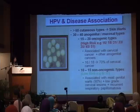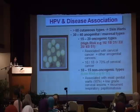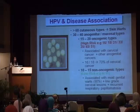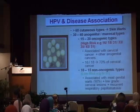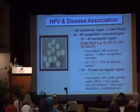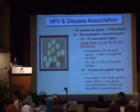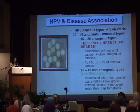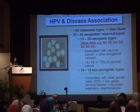The high-risk HPV types, as we all know, among the commonly known ones are types 16, 18, 31, 33, and so on. These are the ones that are highly associated with cervical cancer and other anogenital malignancies. More than 70% of cervical cancers are caused by HPV types 16 and 18. There are 10 to 15 non-oncogenic low-risk types, and the commonest ones are type 6 and 11, which are associated with most genital warts — occurring in 90% of them.